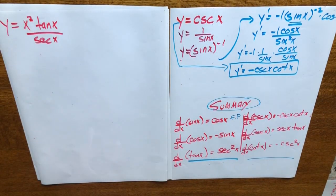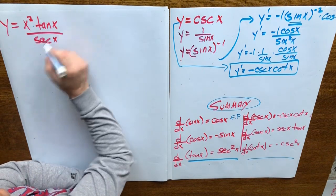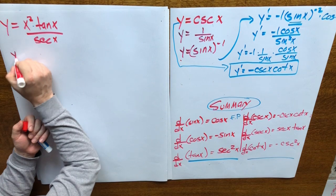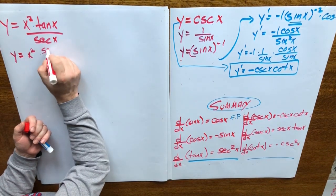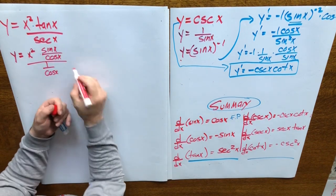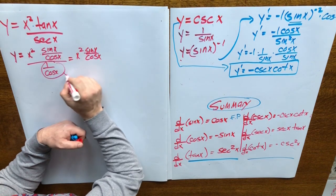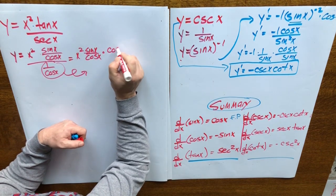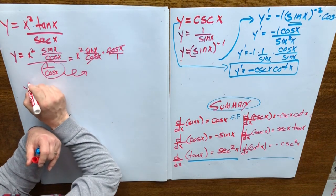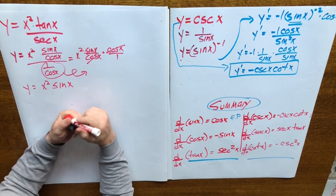The next one involves a product in the numerator and a quotient rule — a tough question as written. What we want to do before taking the derivative is use identities to simplify. So y equals x squared sin x over (tan x divided by cosecant x). That's sin x over cosine x divided by 1 over cosecant. With double-decker fractions, we multiply by the reciprocal, flipping it to get cosecant over 1. The cosecants cancel, simplifying down to y equals x squared sine x.